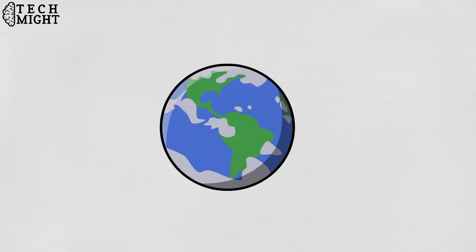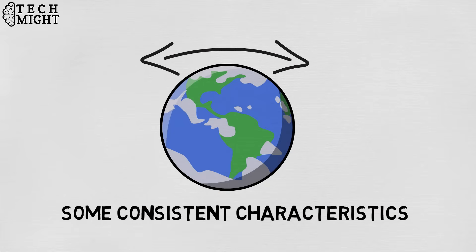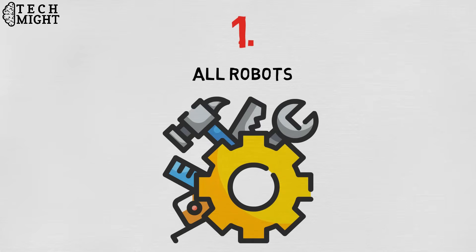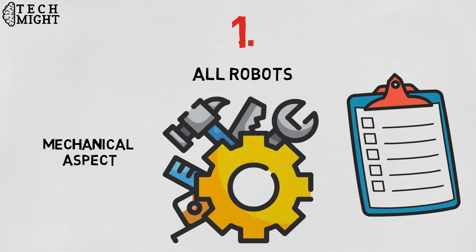While the overall world of robotics is expanding, a robot has some consistent characteristics. First, all robots consist of some sort of mechanical construction. The mechanical aspect of a robot helps it complete tasks in the environment for which it's designed.